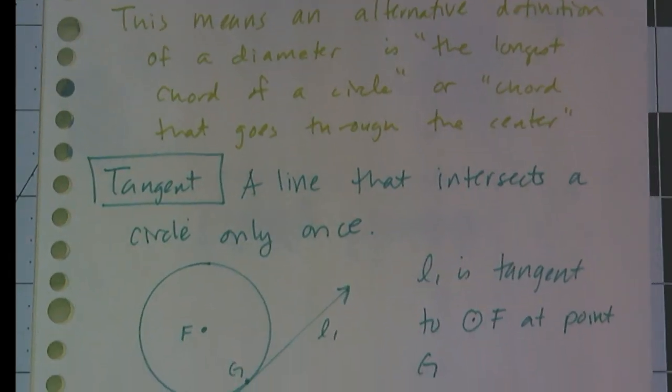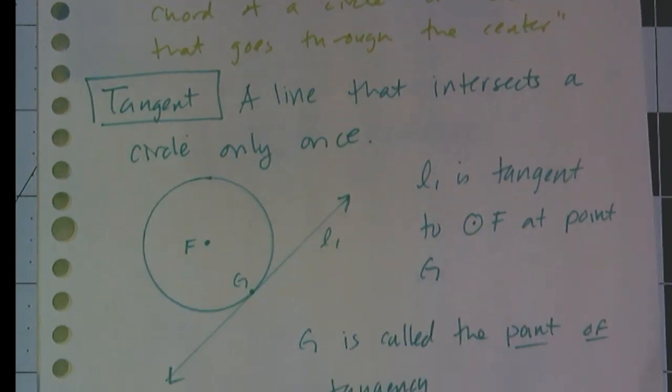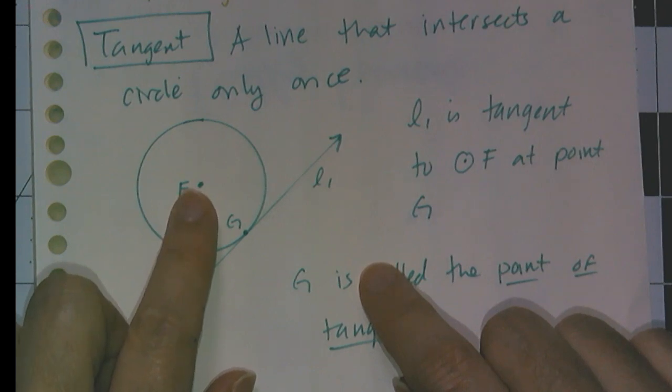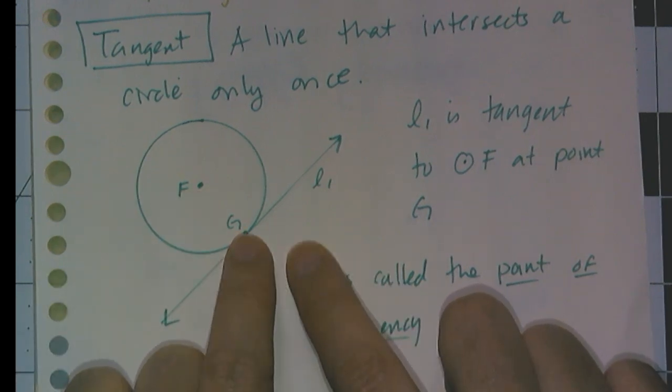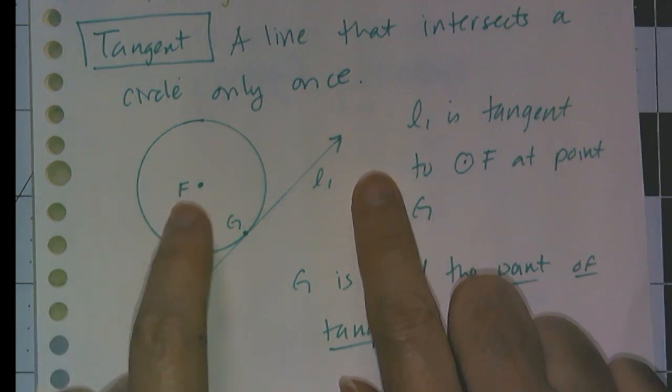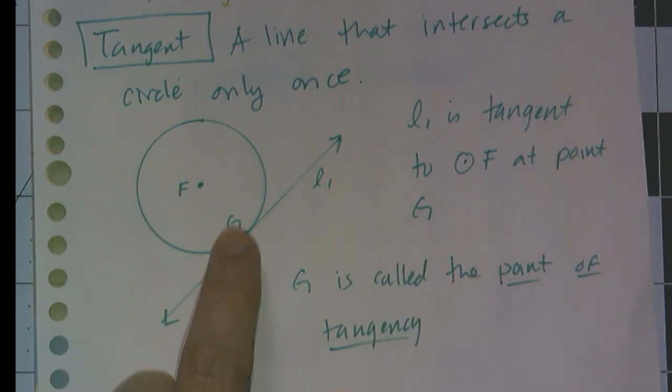Now, some people are familiar with this word, tangent. A tangent is a line that intersects a curve exactly once, and in our case, the curve will be the circle. So circle F has a tangent at point G. So line 1 is tangent to circle F at point G. And G is called the point of tangency.